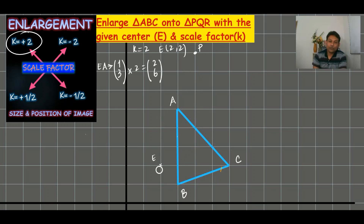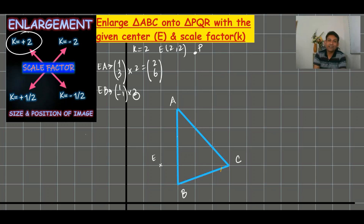To get the position of B, I write the column vector from E to B, which is (1, -1). I multiply (1, -1) with the scale factor two, giving (2, -2). This is the position of the image of B, that is Q.